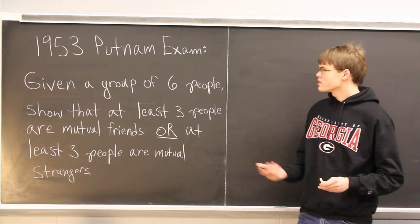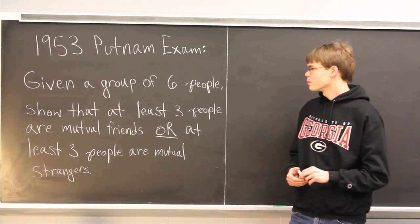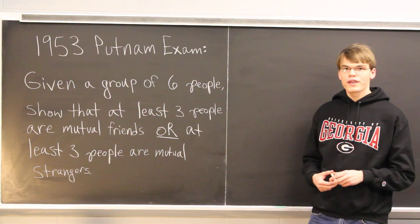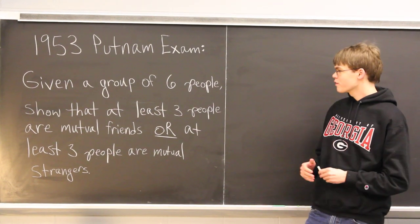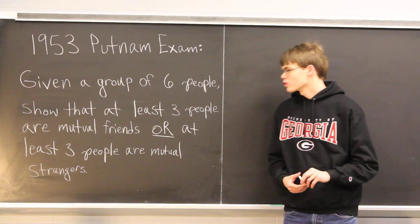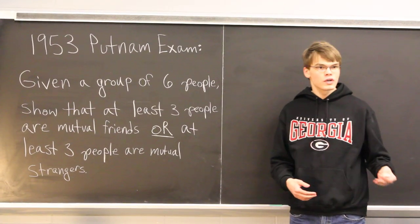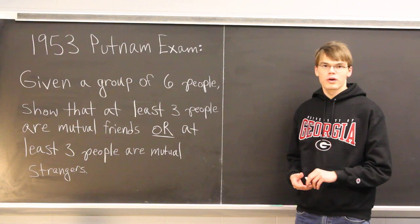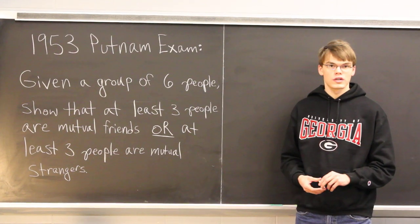The problem reads that given a group of six people, we want to show that at least three of these people are mutual friends, or at least three of these people are mutual strangers.